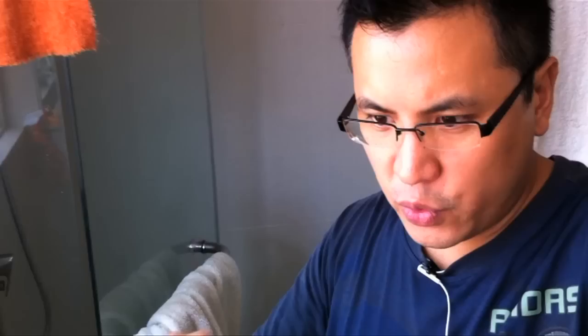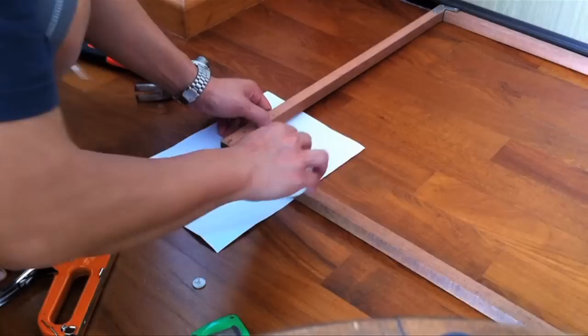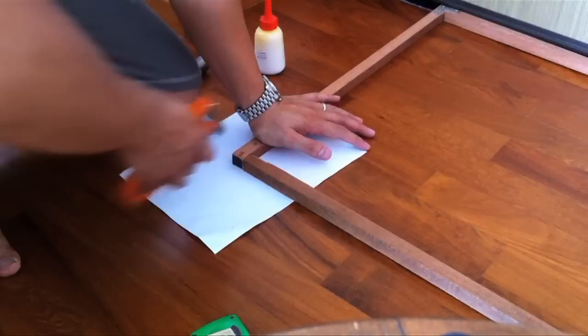The first thing I'm going to do is go ahead and put a spot of glue here where the two pieces of wood join together, and then I'm going to use my staple gun to tack it to hold the two pieces together before I put the L bracket on.